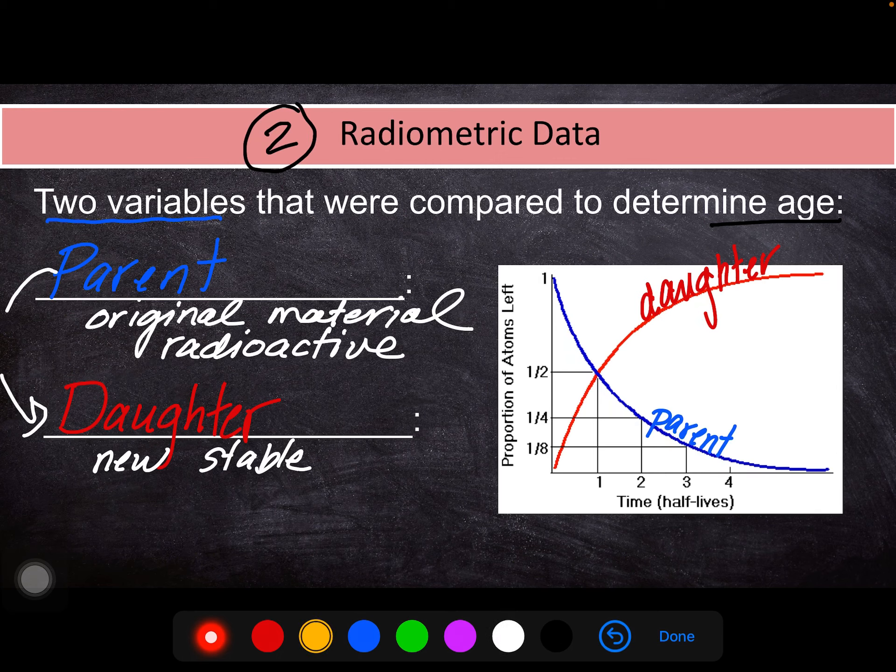Now what we notice looking at our data here is that each one of those amounts changes over time. The parent is our original material, and so the rock has 100% parent material in the beginning when it's created, and over time, that parent material slowly decreases.